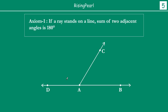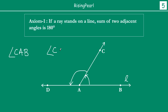So what does this mean geometrically? We start with a straight line D-A-B, and then we draw a ray A-C on top of it. Let us call this line L. So this angle CAB and this angle CAD — these two are adjacent angles. What the axiom is telling us is that this angle plus this angle will be equal to 180 degrees.